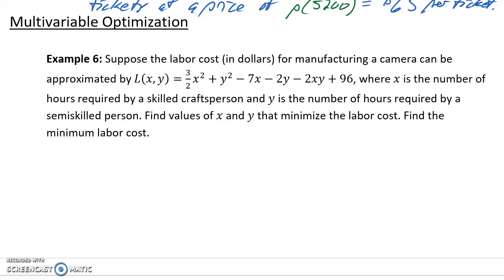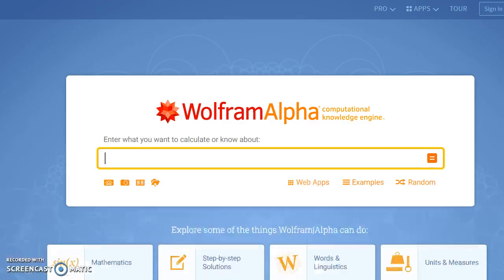Where x is the number of hours required by a skilled craftsperson, and y is the number of hours required by a semi-skilled person. We want to find the values for x and y that minimize our labor cost, and then we want to find that minimum labor cost.